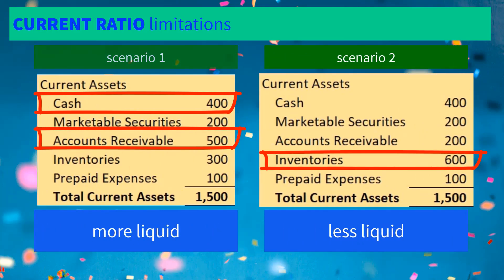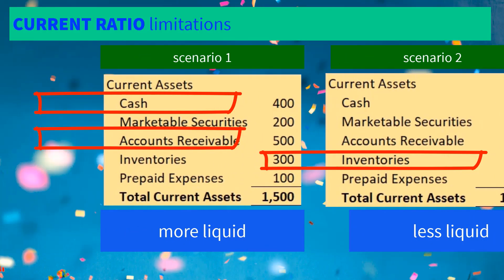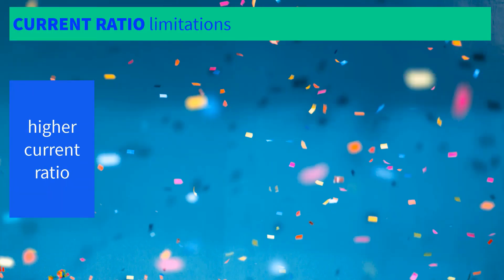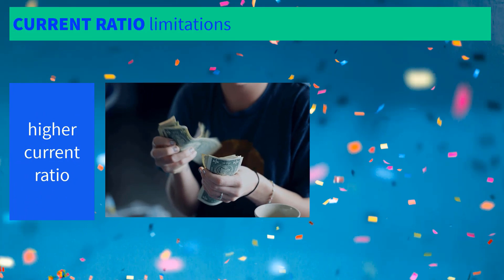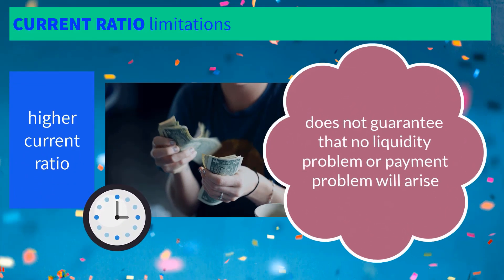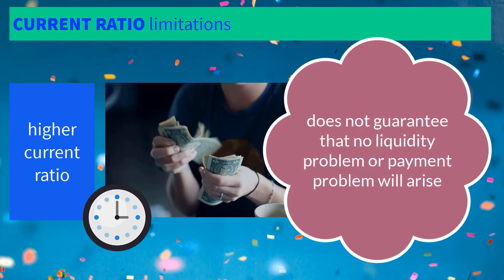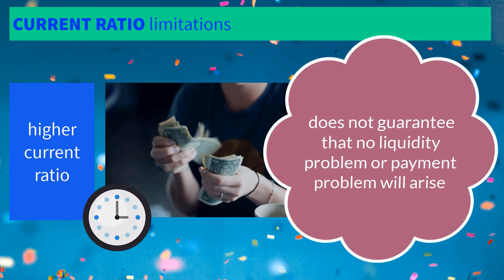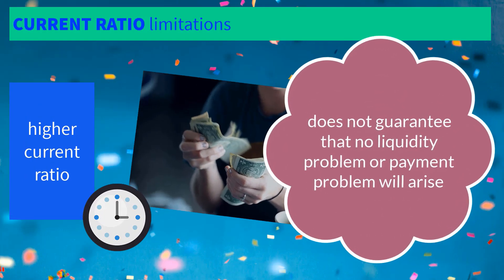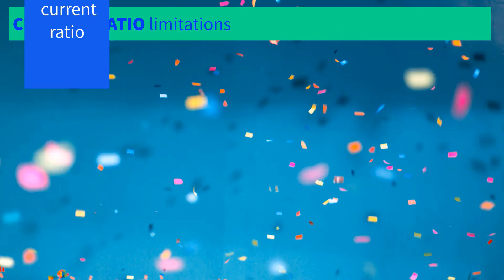Inventories will take more time to be converted to cash. A high current ratio provides comfort that the company will be able to pay obligations on time, but does not guarantee that no liquidity problems or payment problems will arise.